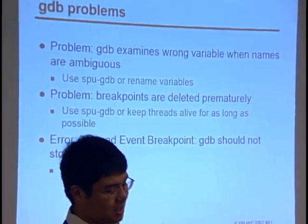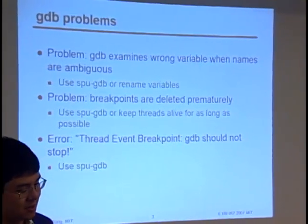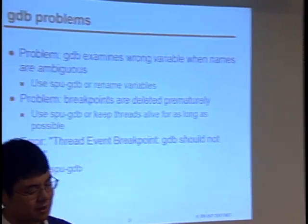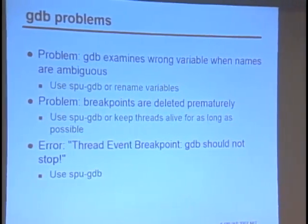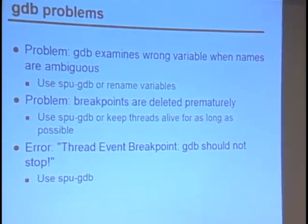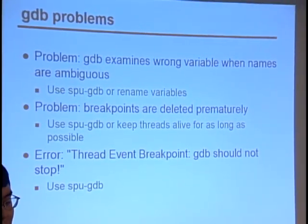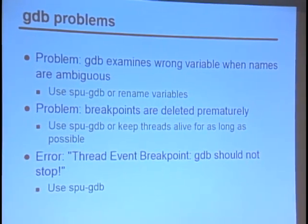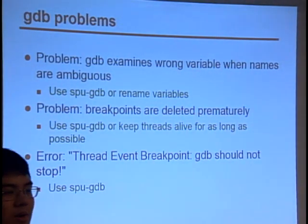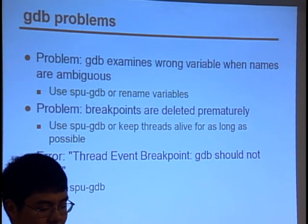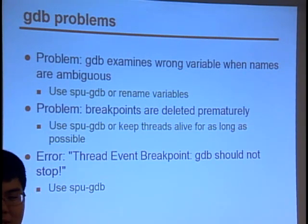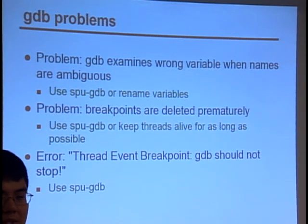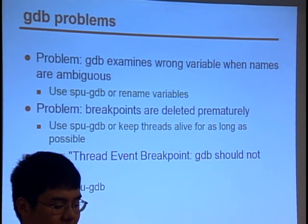We ran into some problems last time with GDB and various error messages. Sometimes GDB is going to examine the wrong variable, as we saw when the names are ambiguous. We had problems with ambiguity between variables which had the same name, where one was in the SPU thread and one was in the PPU thread. To work around this, one thing you can do is use SPU GDB, which will just lock onto a particular SPU thread. Then you can just look for variable names in that thread. You can also, of course, rename your variables.